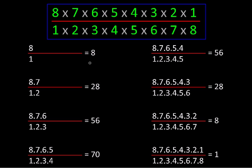If we add all these numbers — 8 + 28 + 56 + 70 and so on — we get 255. The last combination is of course no doors open, all shut, which gives us the final count of 256. So that is the trick given in Lilavati 900 years ago.